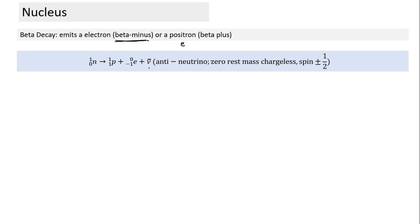Anti-neutrino took several decades to detect because the energies in experiments were not matching the calculated Q values. Anti-neutrino has extremely large penetration power — it can pass through the entire Earth without interacting with anything. It doesn't collide or create any observable effect, making it extremely difficult to detect. More than this we need not know.